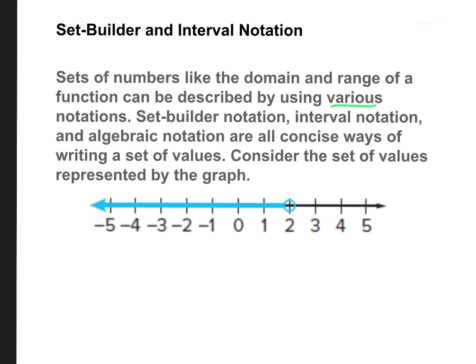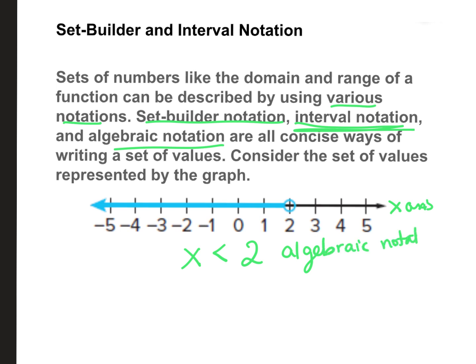We can use various notations. I mentioned interval notation, set builder notation, and algebraic notation — they're all concise ways. I'll start with algebraic notation. Let's say this is x, because we're pretending this is the x-axis. This is x is less than 2 — that's your algebraic notation. For interval notation, reading your number line from left to right, from negative infinity to positive infinity, where does the shaded blue region start?